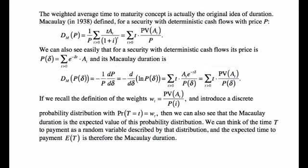That weighted average time to maturity concept is the original idea of duration. In 1938, Macaulay defined for a security with deterministic cash flows — with price P — what we call Macaulay duration as the weighted average time to maturity: the sum of t times the present value of A_t divided by the price. For a security with deterministic cash flows and price expressed as the sum of present values under the force of interest, the Macaulay duration is indeed the weighted average time to maturity.